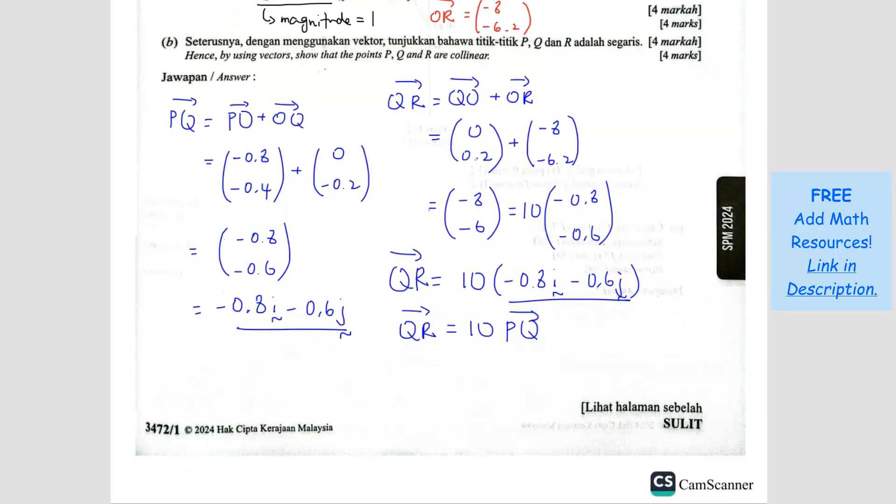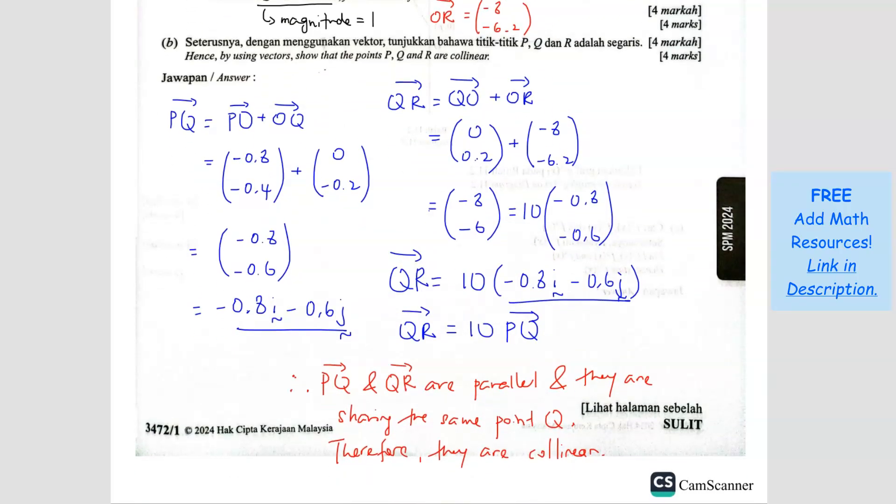So now we can do our explanation. You can write like this. PQ and QR are parallel. Because they are parallel, we are able to form this. If they are not parallel, we won't be able to form this. So PQ and QR are parallel and they are sharing the same point Q. Therefore, they are collinear. So that's how you do it. You want to show that they have the same vector.